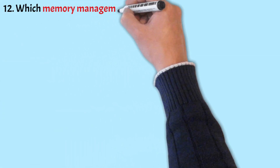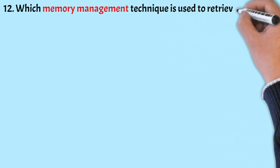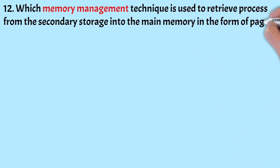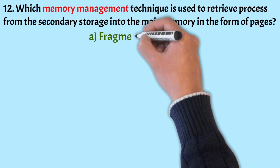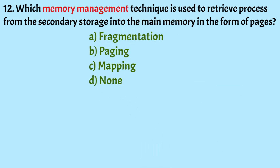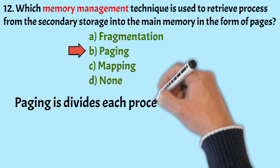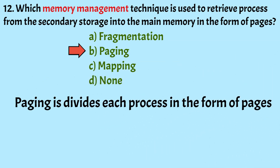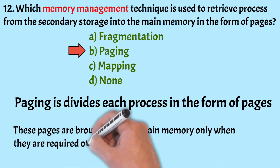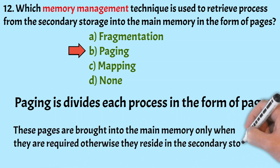Which memory management technique is used to retrieve a process from secondary storage into main memory in the form of pages? Options: fragmentation, paging, mapping, none. The correct answer is Option B, paging. Paging divides each process into pages. These pages are brought into main memory only when required; otherwise, they reside in secondary storage.